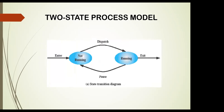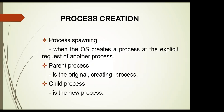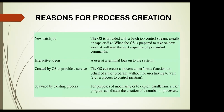Two-state process model and process creation: when the OS creates a process at the request of another process, the original creating process is called the parent process and the new process is called the child process.